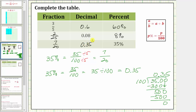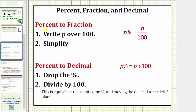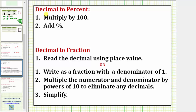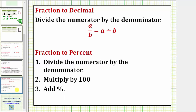I will show the formal rules for performing all these conversions, but as long as you remember that a fraction bar means division and a percent is a number compared to 100, there's no reason to memorize all the rules. But if you do want the rules, here they are: the formal rules for converting a percent to a fraction and a percent to a decimal; converting a decimal to a percent and a decimal to a fraction; and converting a fraction to a decimal and a fraction to a percent.